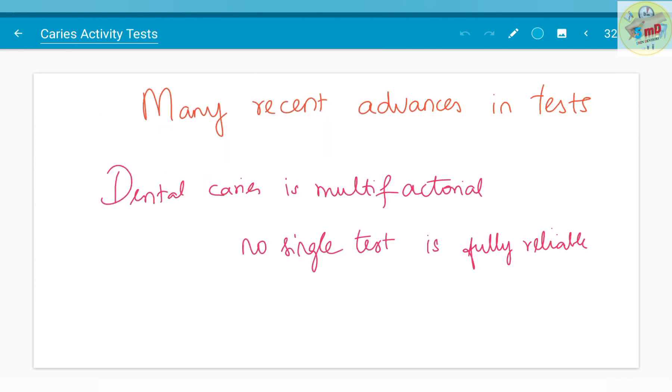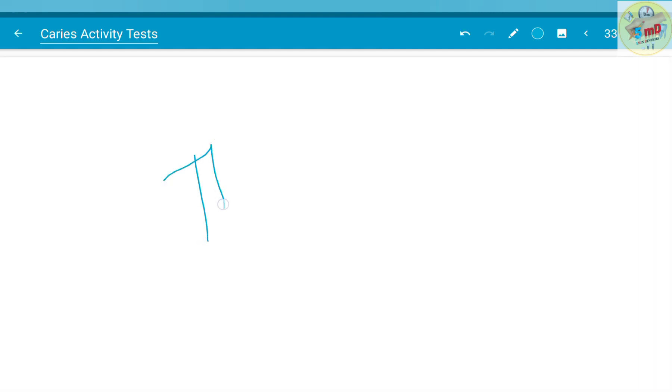To conclude the caries activity test, we have to note that there are many recent advances in these tests, but dental caries is a multi-factorial disease and one factor alone cannot be cornered or centralized for the presence of dental caries. Therefore, there are multiple opportunities for creating new tests which will analyze multiple factors at the same time. See you soon in the next video. Hope you got a quick idea on the caries activity tests available. Thank you.